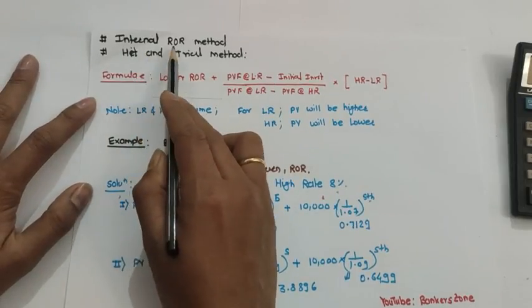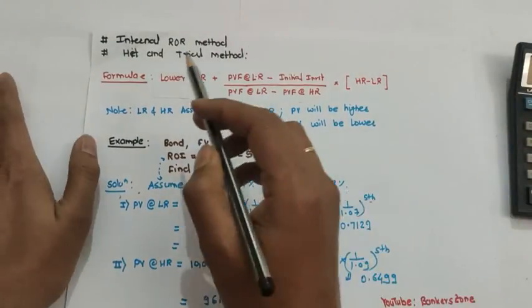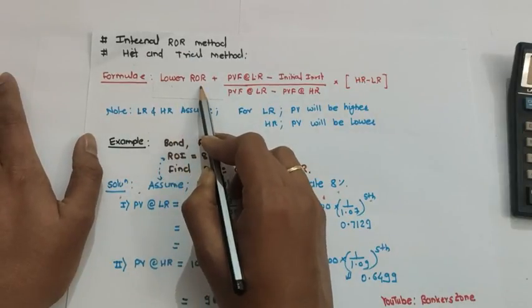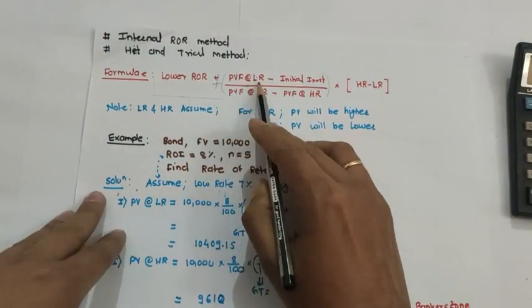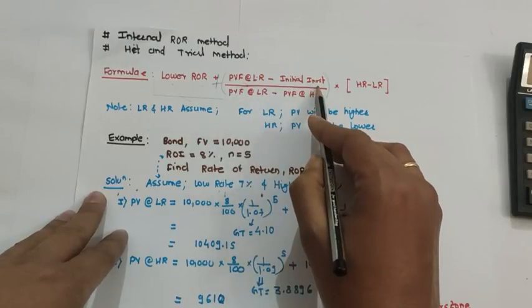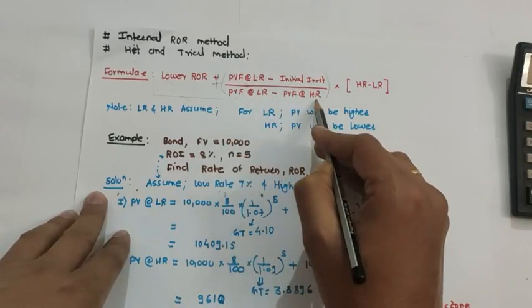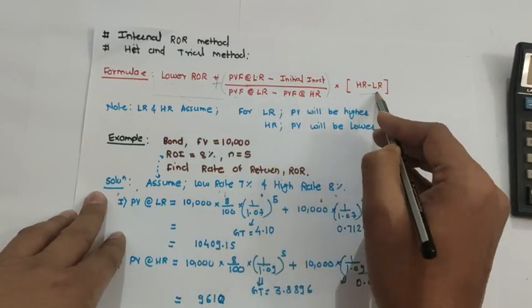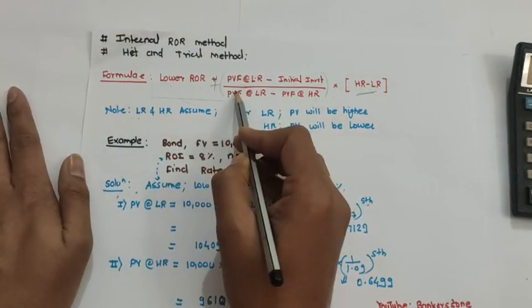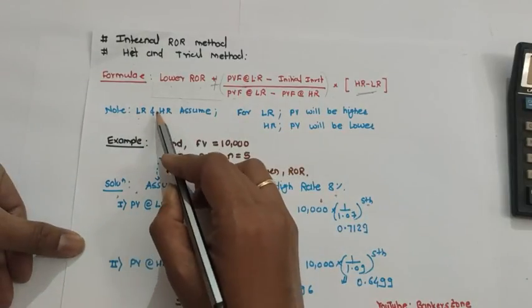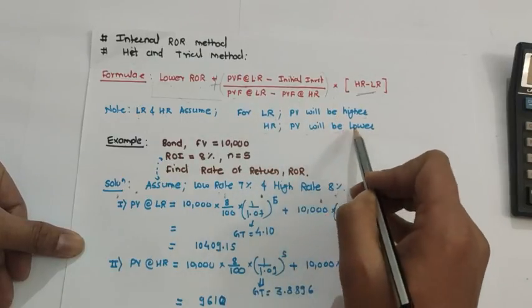The hit-and-trial formula for rate of return is: lower rate of return plus, in brackets, present value at lower rate minus initial investment (face value), divided by present value at lower rate minus present value at higher rate, multiplied by the difference between higher and lower rates. Remember: for a lower rate, present value will be higher; for a higher rate, present value will be lower.